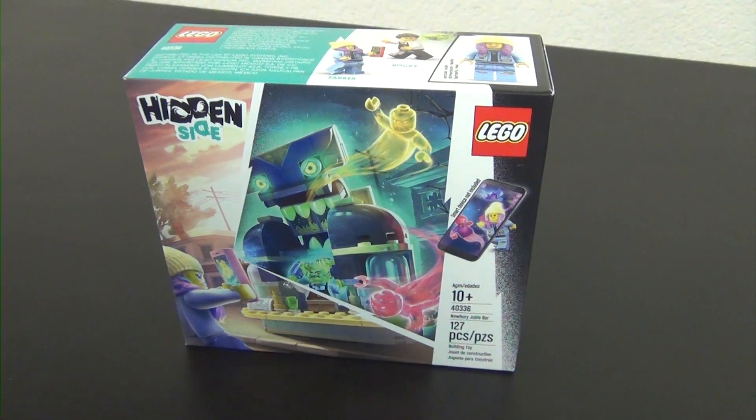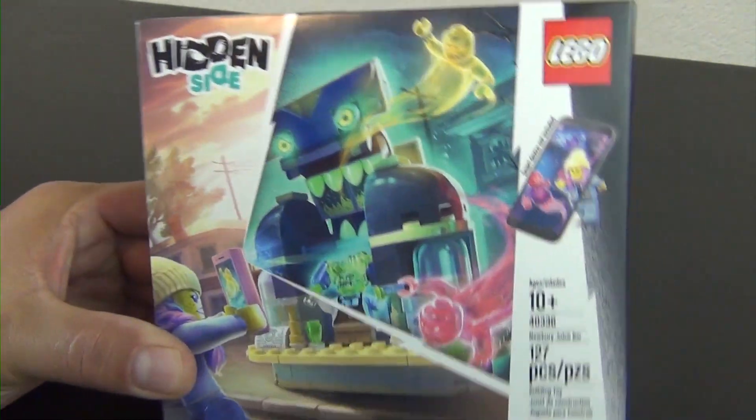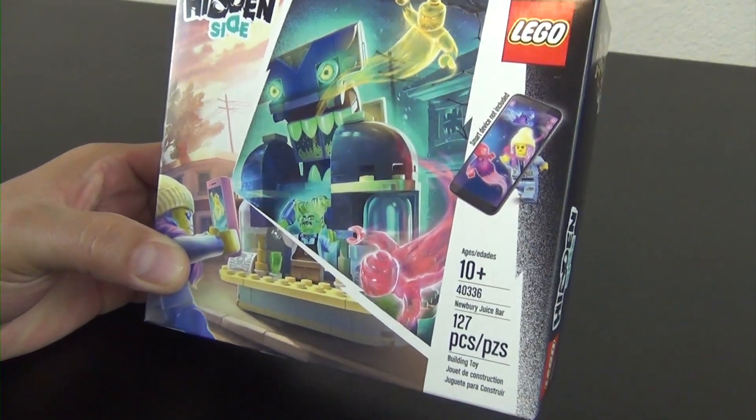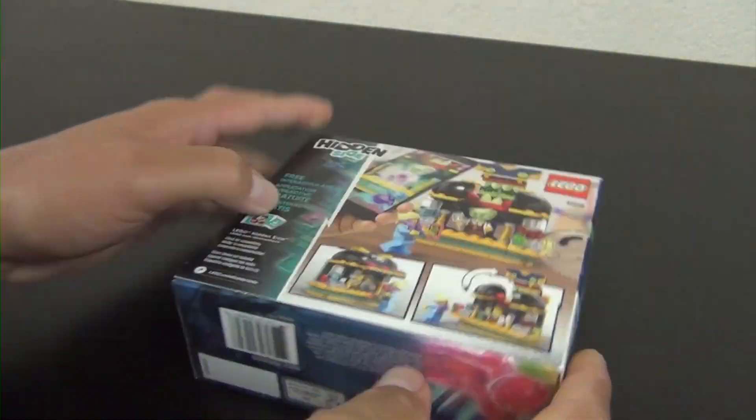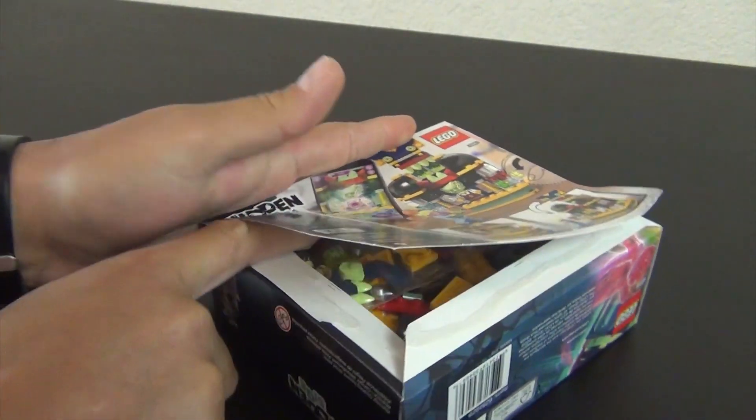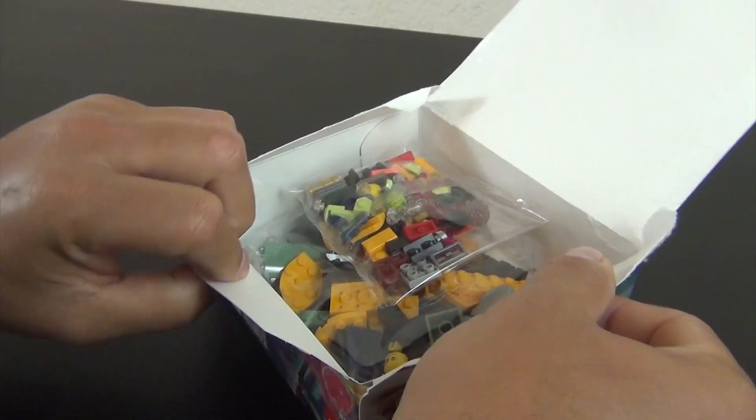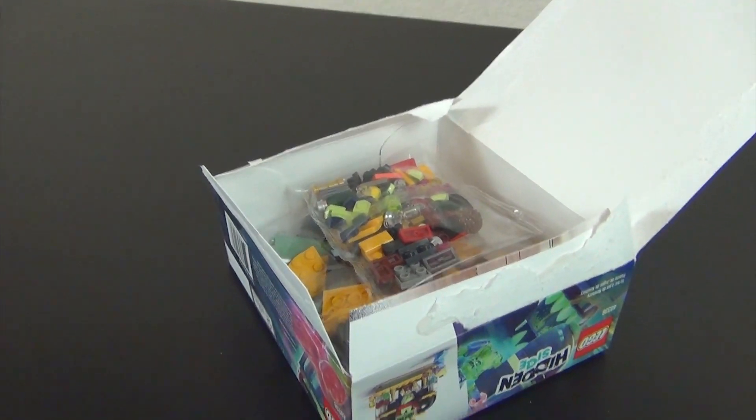Hey everyone, welcome back to The Hidden Brick, where today we're going to build the LEGO Hidden Side Newbury Juice Bar. Very small set, this was something that came free with a purchase, so not something that you could readily buy at a store, but it's not really that big anyway. Some of the other Hidden Side sets probably a poor bang for your buck, I guess you would say.